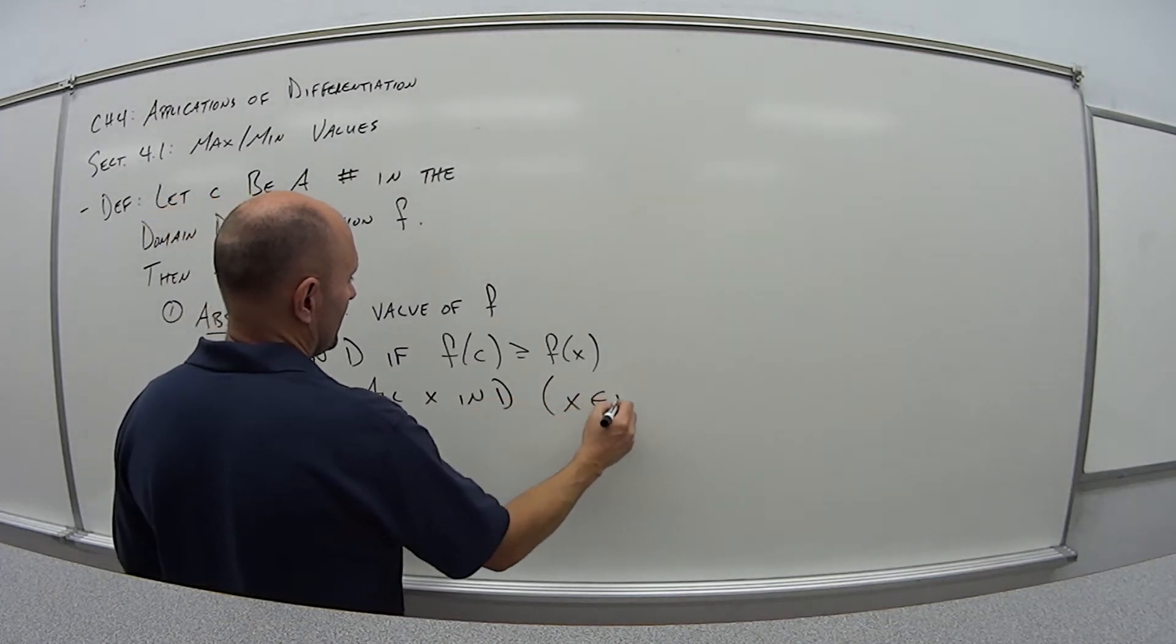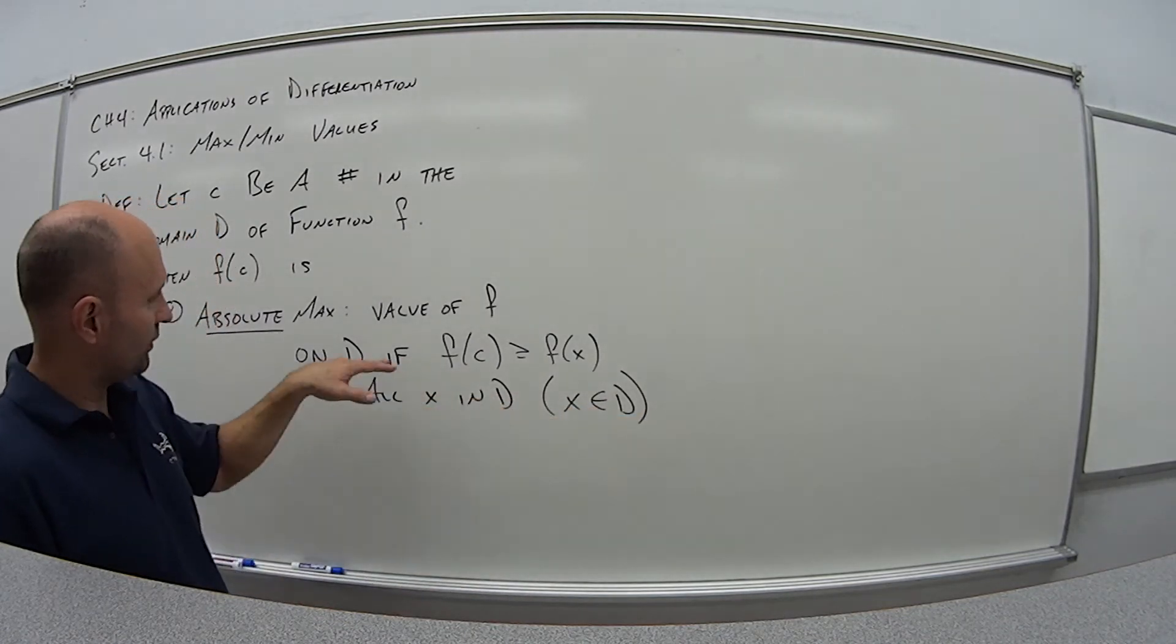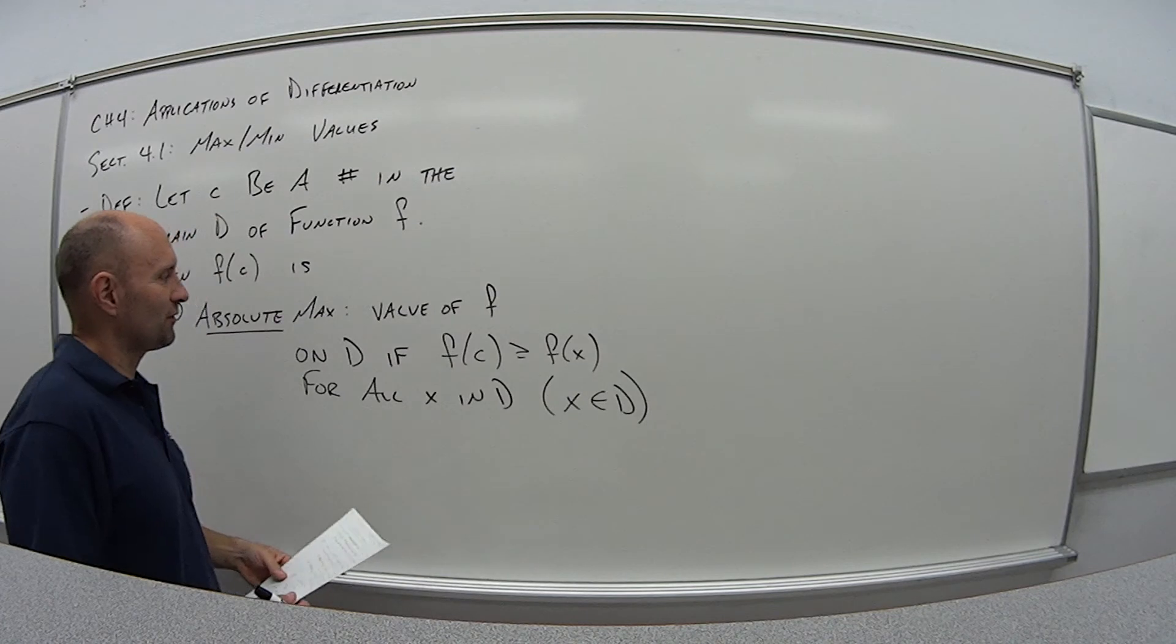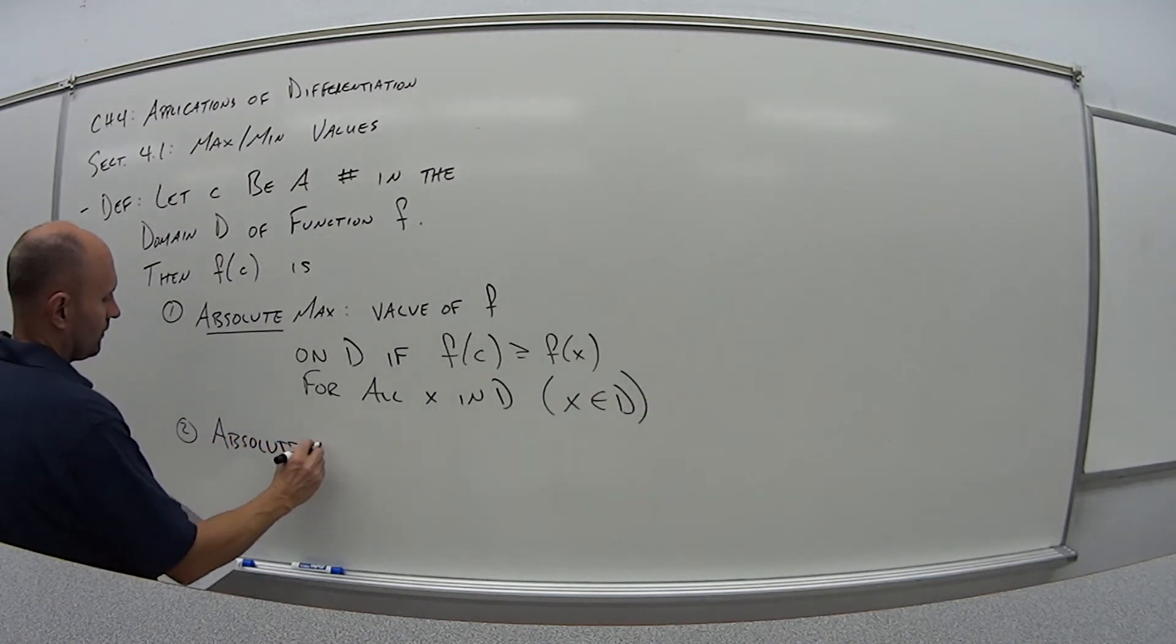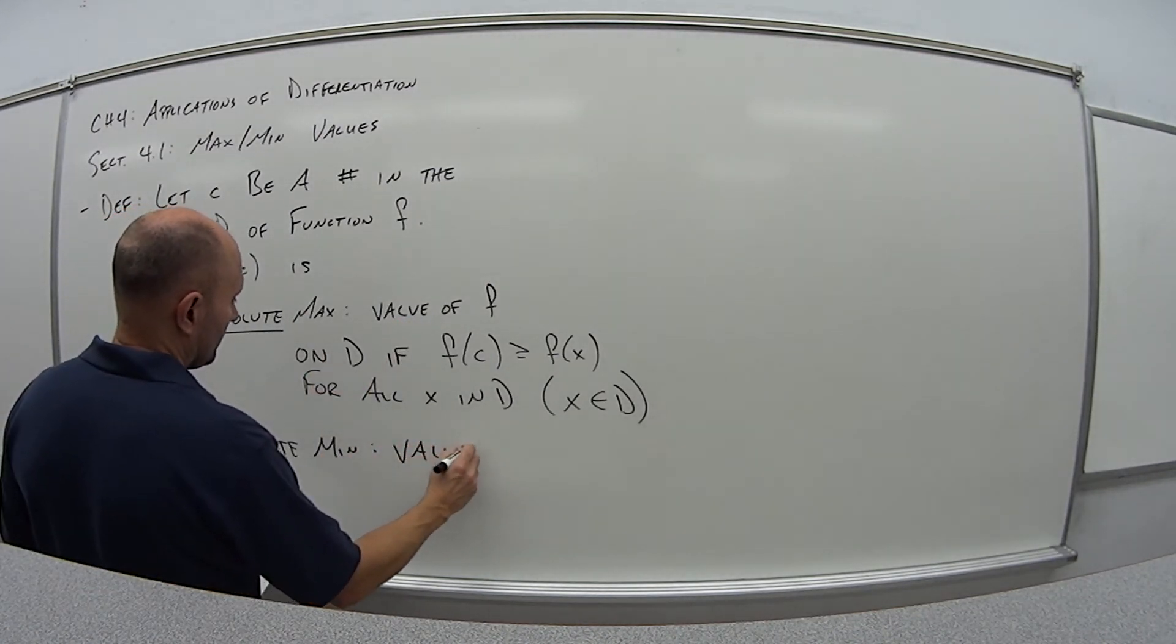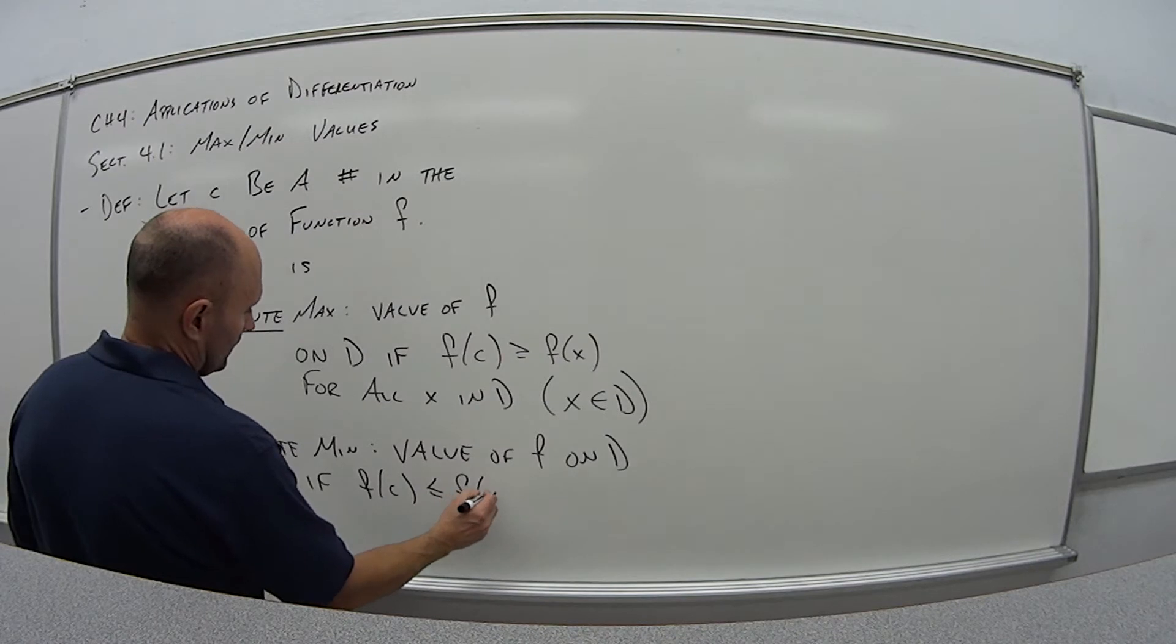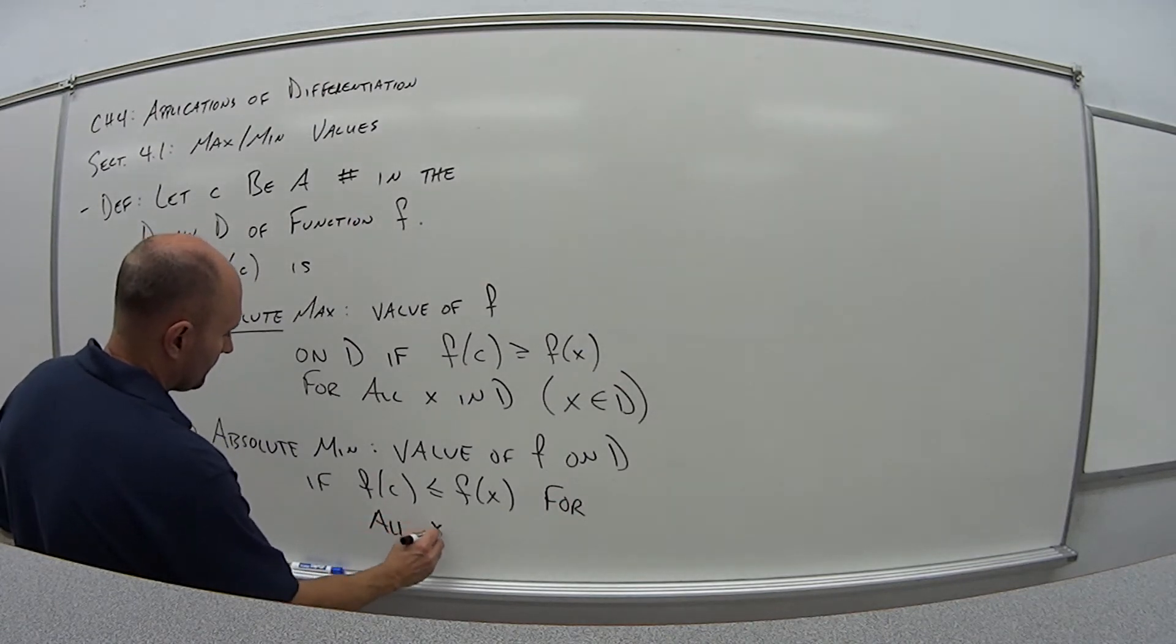And mathematically, you might see it written like this. I don't know if your instructor will use this notation, but this is x in d, in the set of d, in our domain. So basically, if I have a function, and if I pick some value, and there's no other value in that function greater than any other x value that I pick, clearly that's my absolute max. And similarly, the absolute min is the value of f on d if f(c) is less than or equal to f(x), again for all x in d.